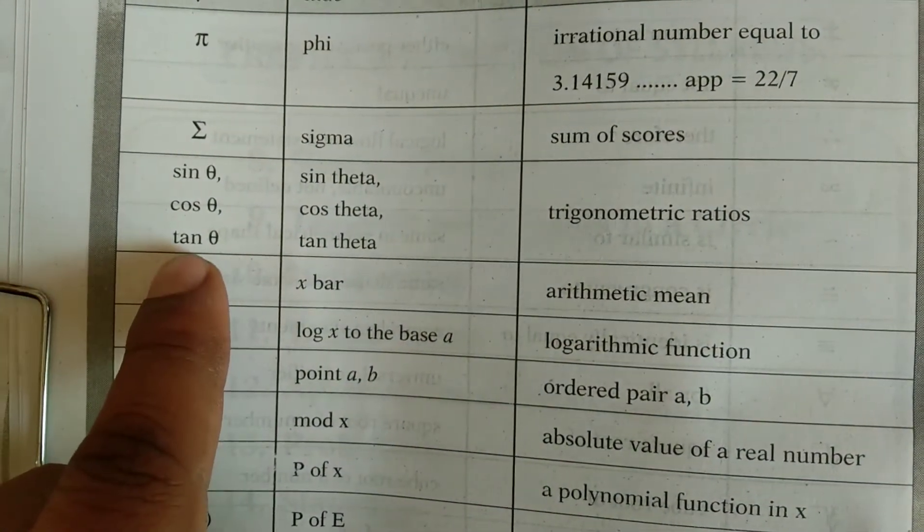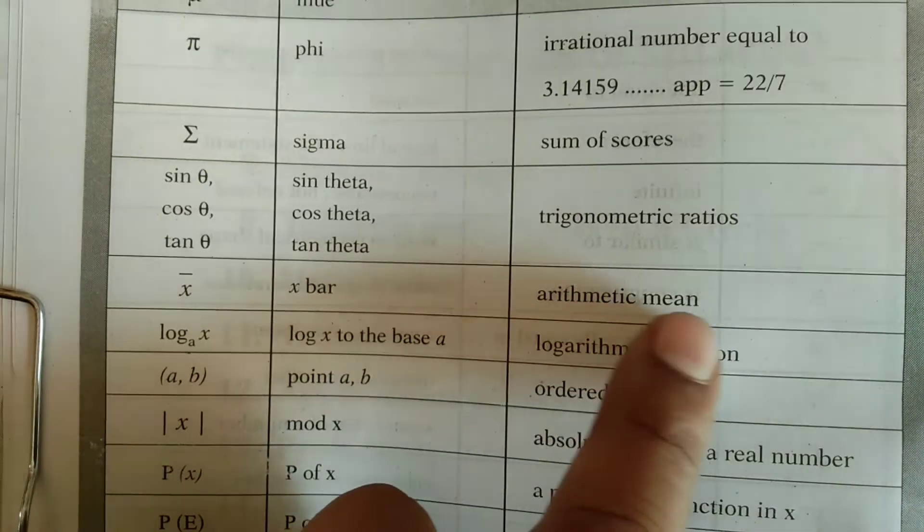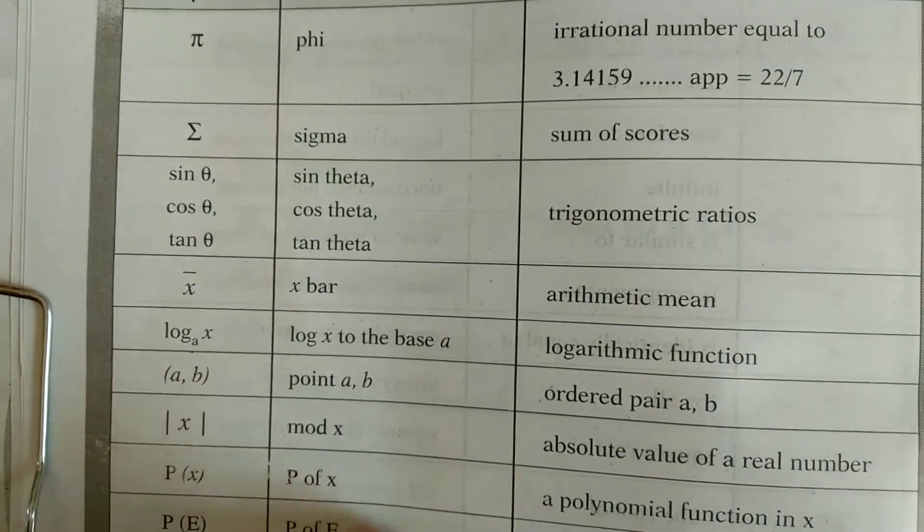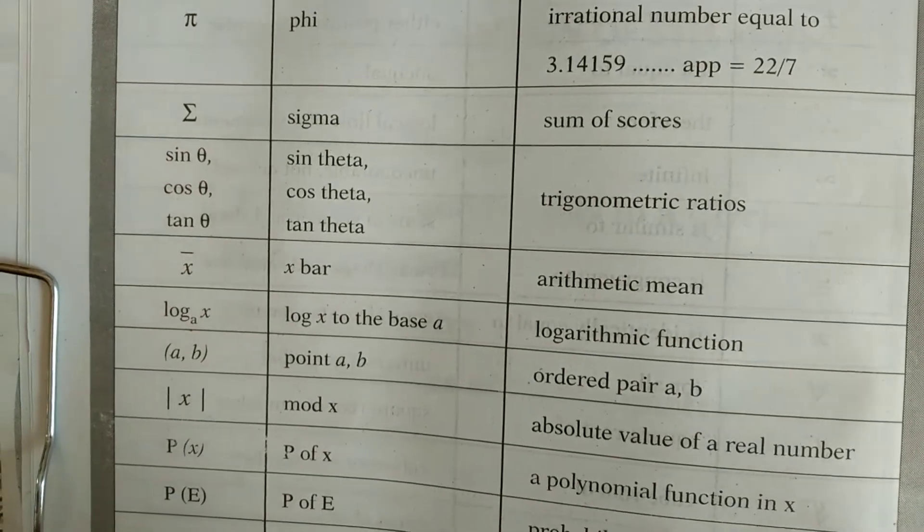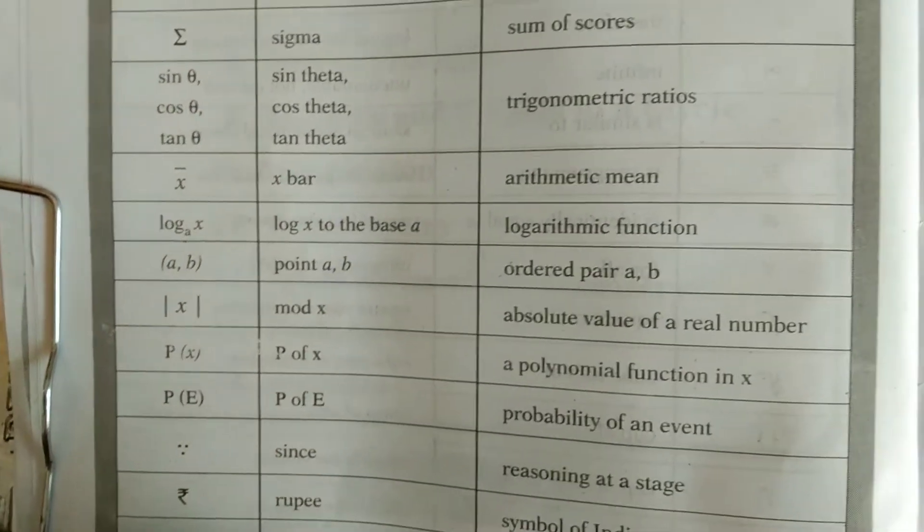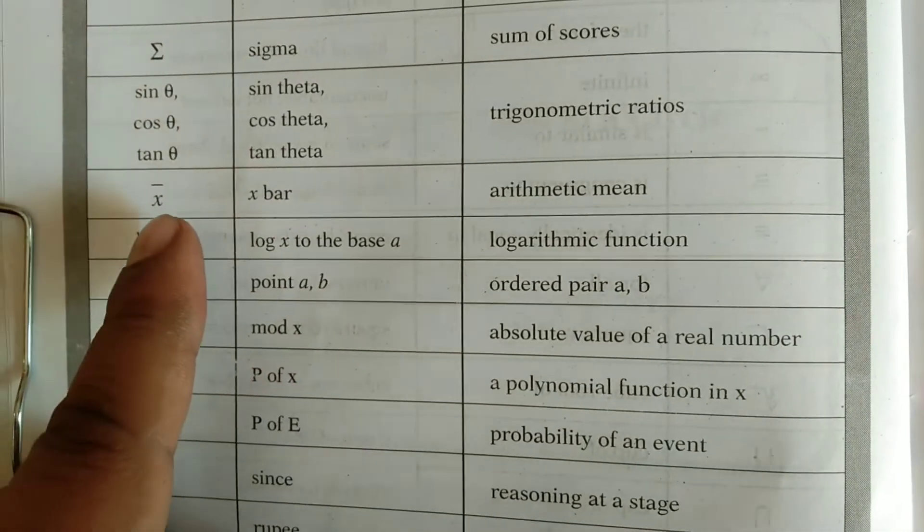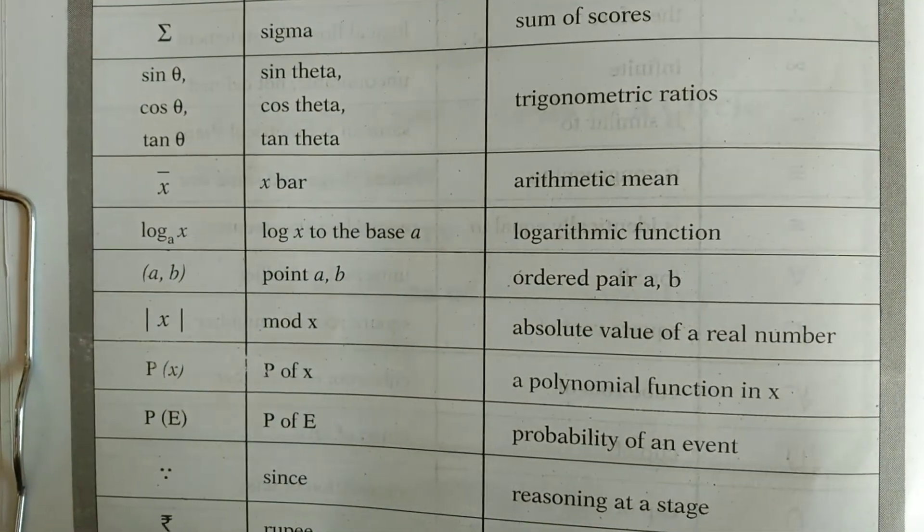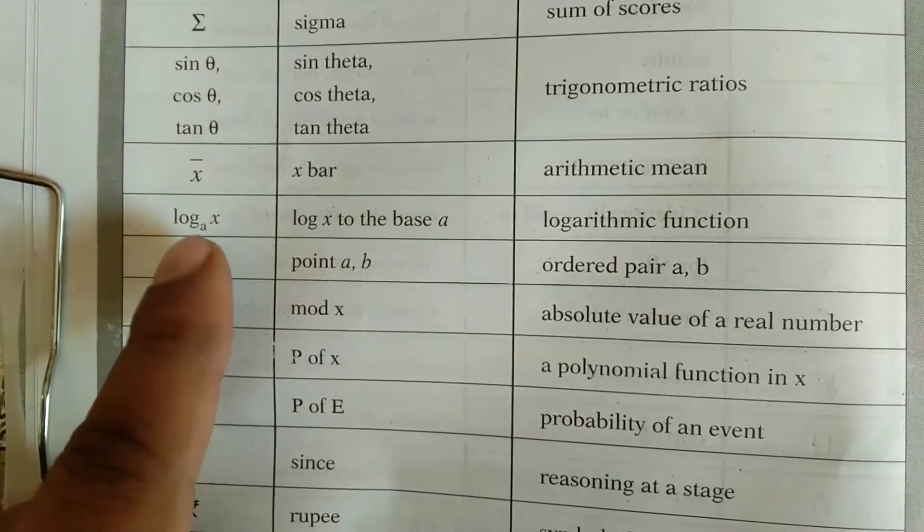We call it as x bar, arithmetic mean. Log x to the base a, that is logarithmic function. Next one, a comma b, that is point a comma b, ordered pair a comma b. This is mod of x, that is absolute value of a real number.